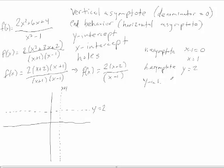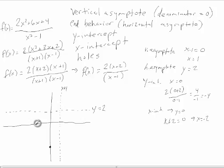So we have an asymptote at y = 2. The y-intercept is where x = 0; plugging into our simplified function gives 2(0 + 2) / (0 − 1), which is 4 over negative 1, or −4. So −4 is our y-intercept. The x-intercept is where y = 0, or where the numerator equals 0, which is when x + 2 = 0, so x = −2. Our x-intercept is at (−2, 0).